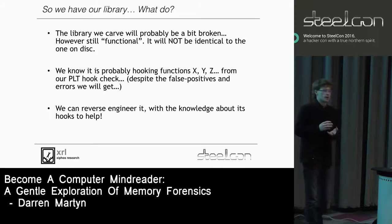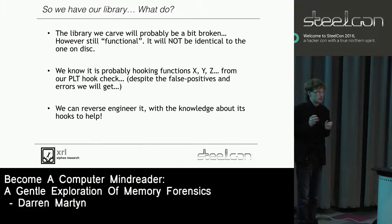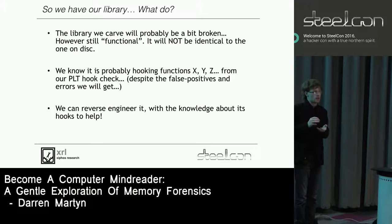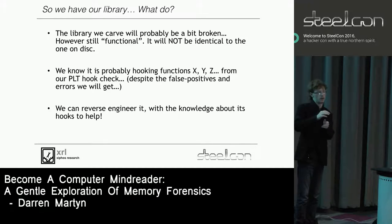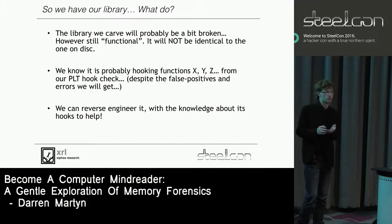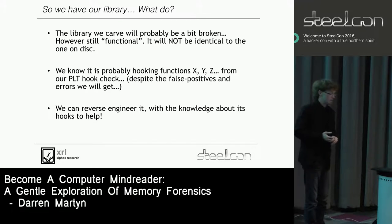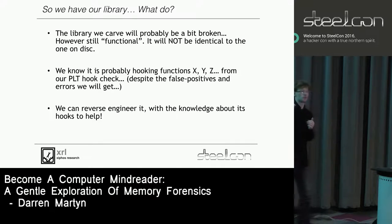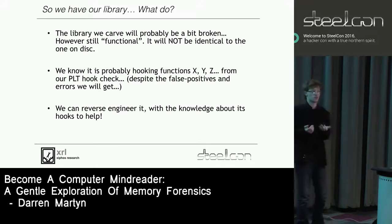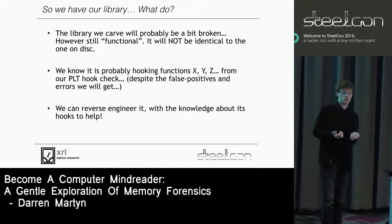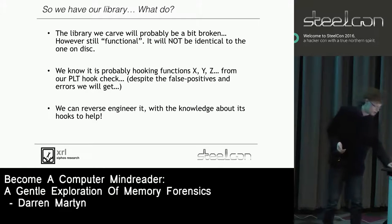One thing important to note for reverse engineers: when you carve the library out of memory as opposed to pulling it off disk, it's not going to be the same as the one on disk. The MD5 sum won't match and some of the alignment is going to be slightly banjaxed. But it's still a functioning shared object - when you carve it out it'll work just fine. We already know from earlier that it's hooking a massive list of functions, basically the entirety of glibc.